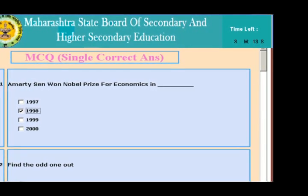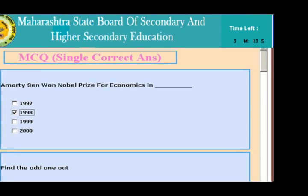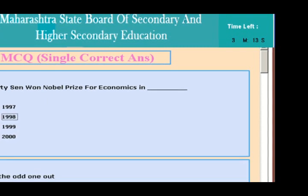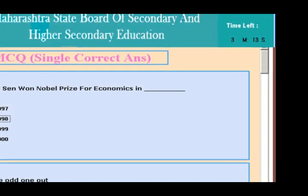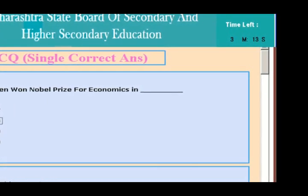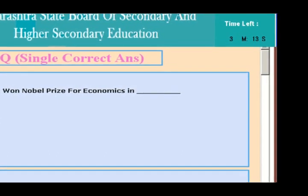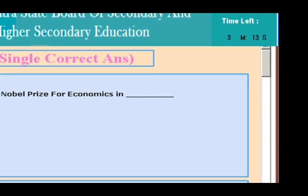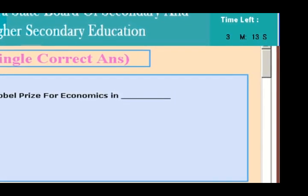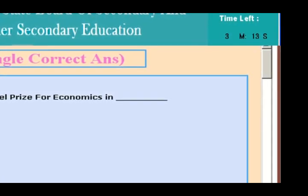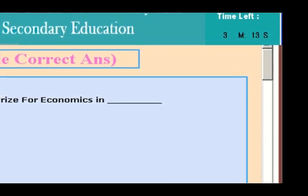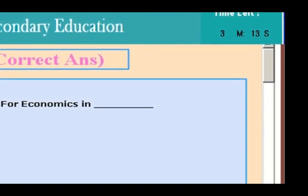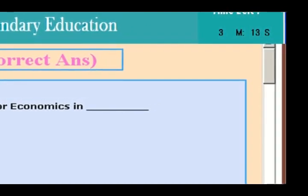The Guru Mantra is: solve every question — even if the question seems wrong to you. If your answer is correct, you will get the marks. If the question and options are incorrect and you selected an answer, you will still get marks, as this is taken care of by moderators at the time of assessment.